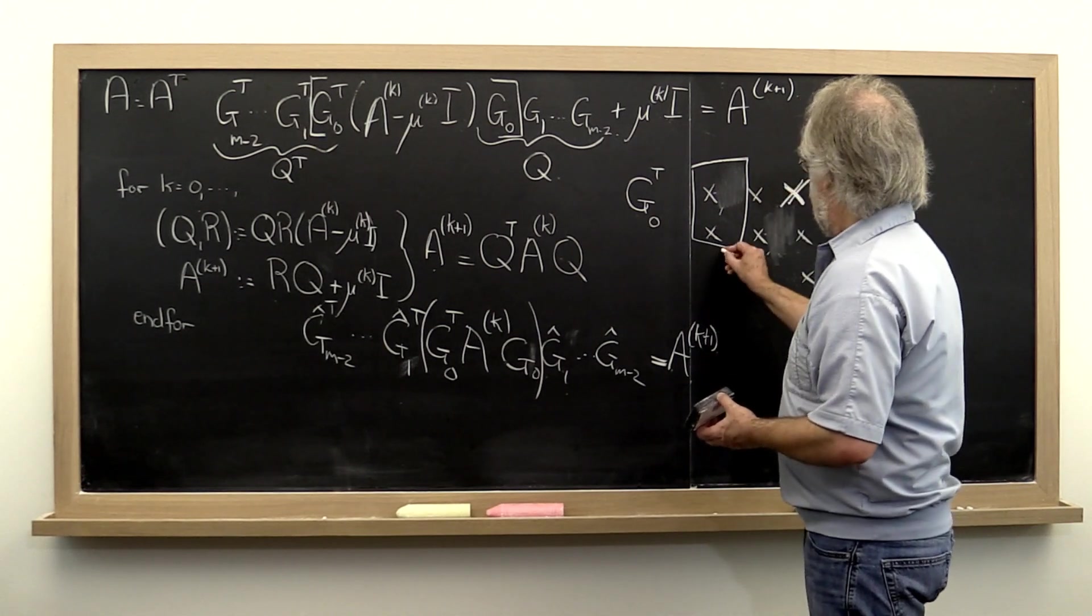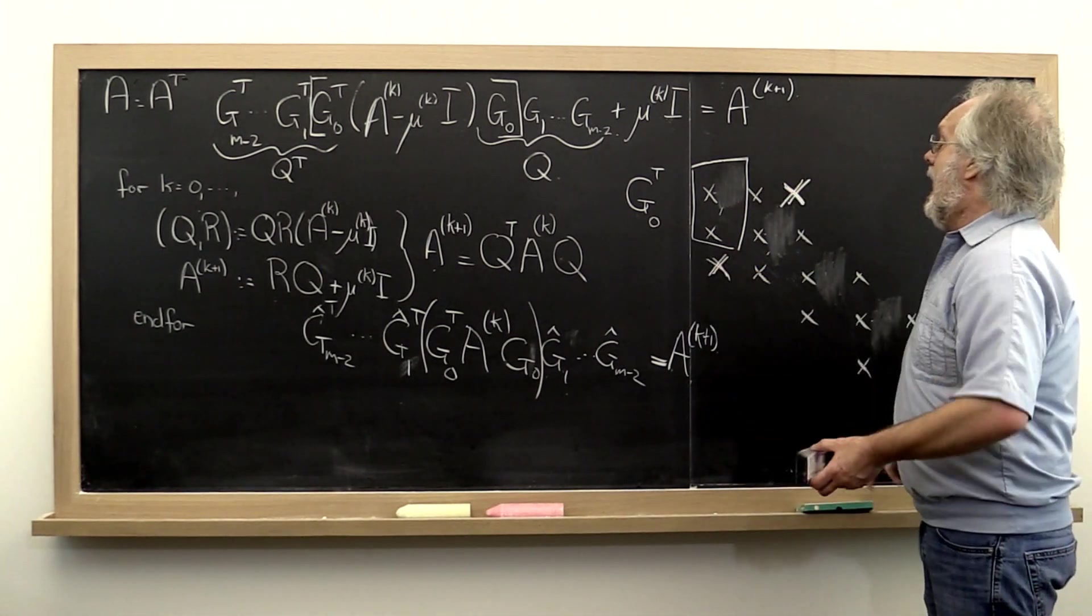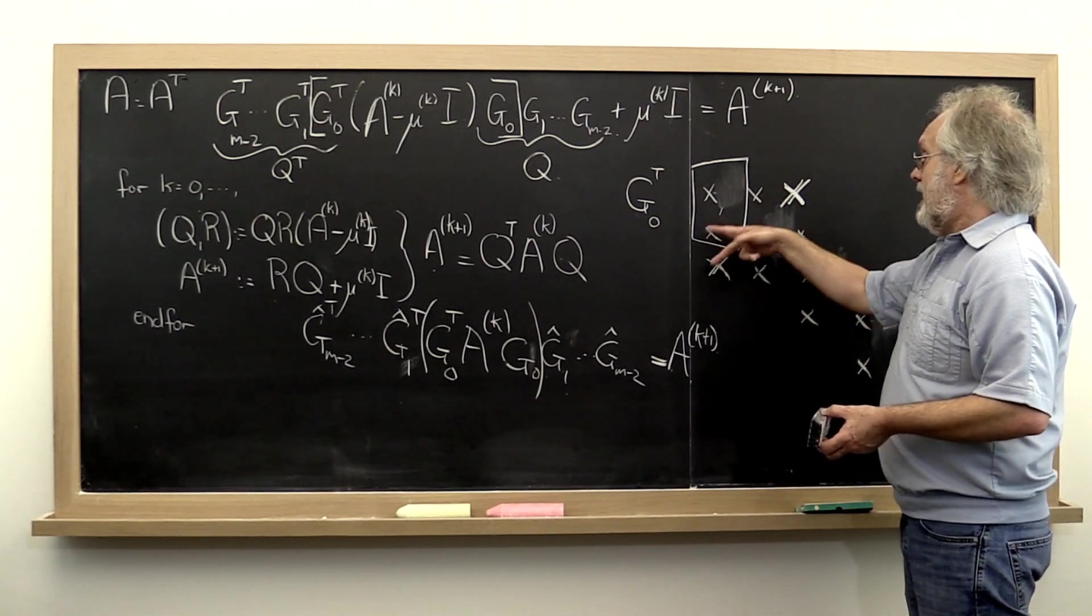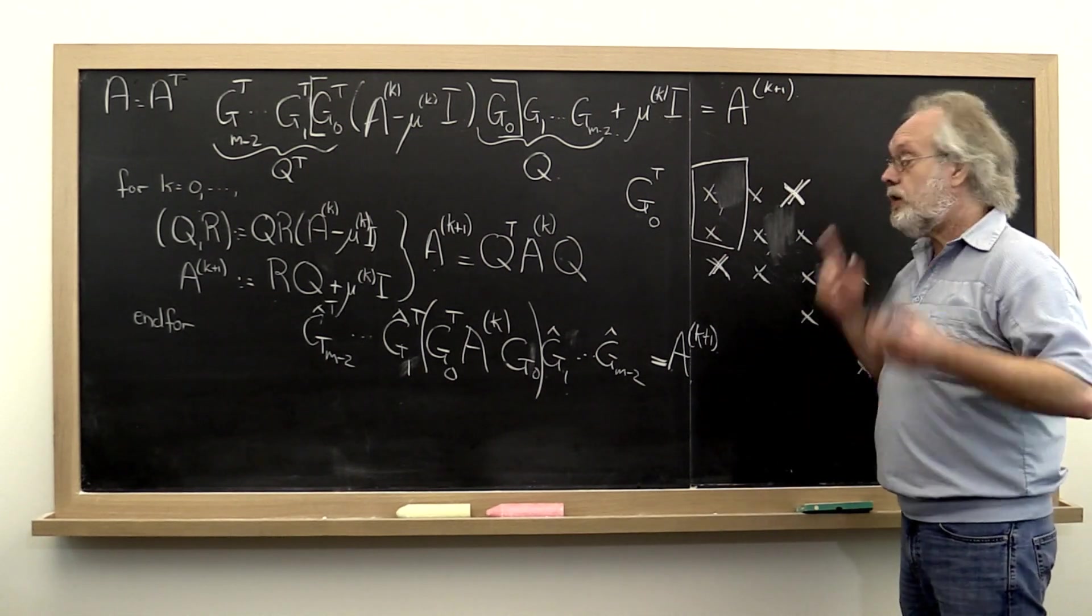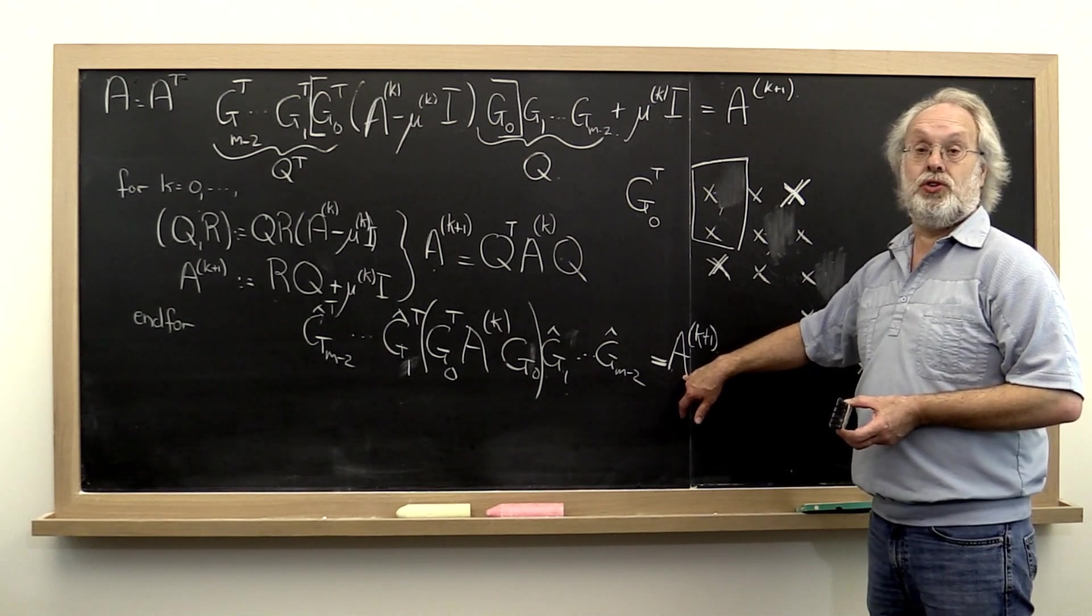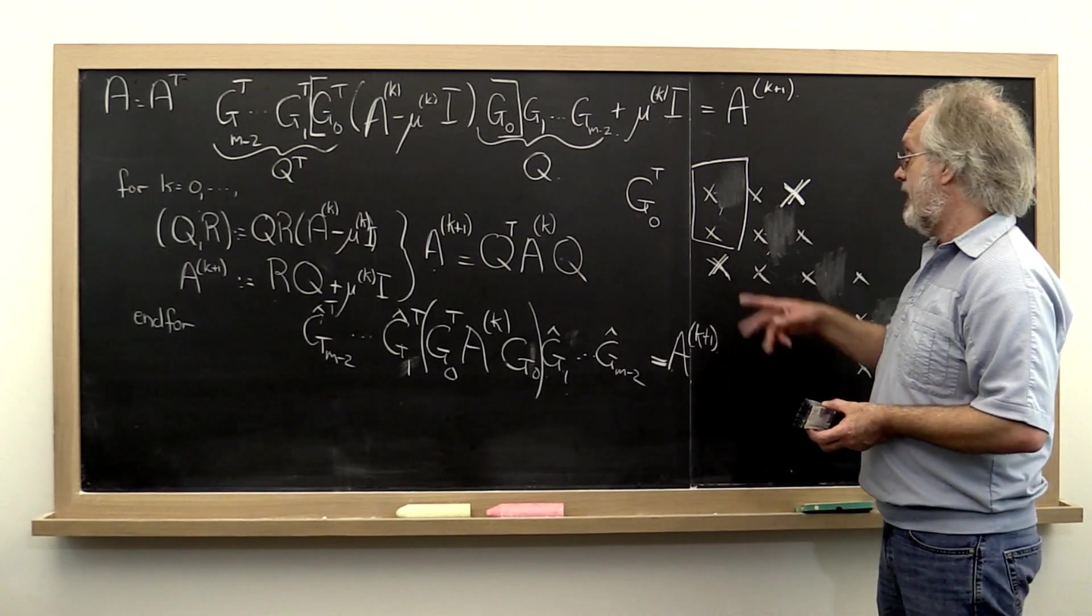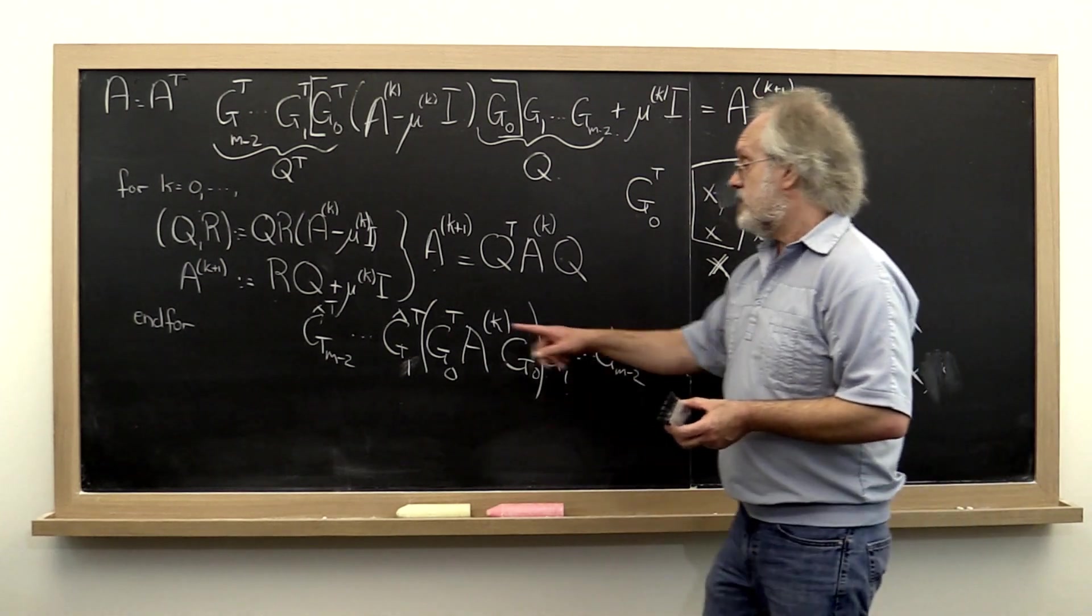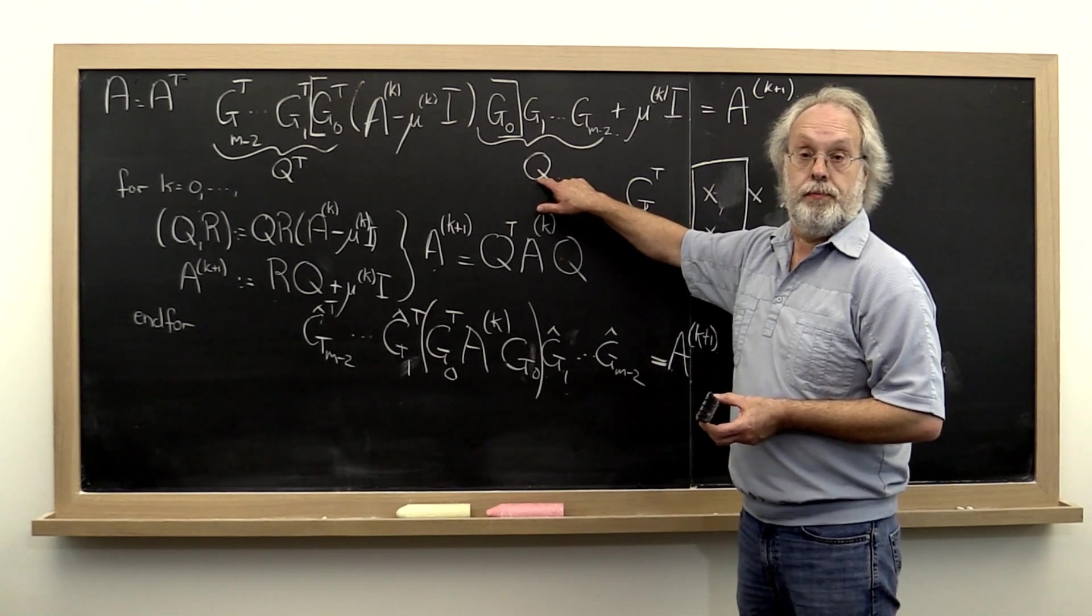And if we now can find a sequence of Givens rotations that makes this back into a tridiagonal matrix, then we know that the tridiagonal matrix is identical to this next iteration that we want, A k plus 1, as long as how we compute and apply those Givens rotations does not corrupt that first column of our matrix Q.